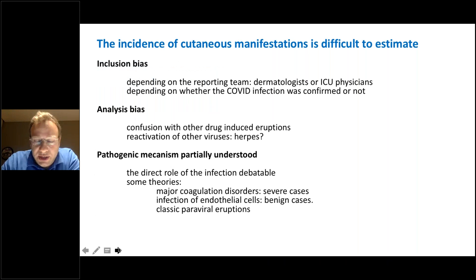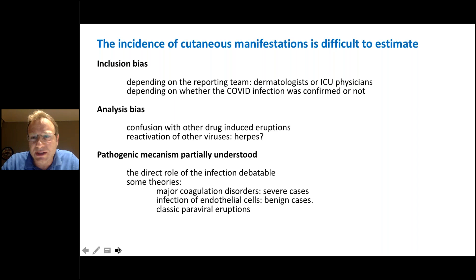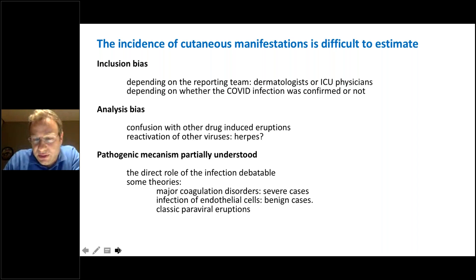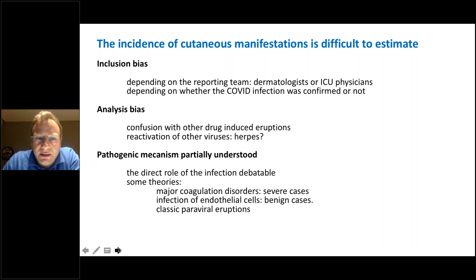I will try to summarize what we had during this year. First, a little bit of epidemiology. The incidence of cutaneous manifestations is really very difficult to estimate. Depending on the publications, it may vary from 0.8% to 20% and even 30% in some publications. We have this variation due mainly to two factors. First is the inclusion bias, which depends on the reporting team — whether it was a dermatologist or ICU physicians.